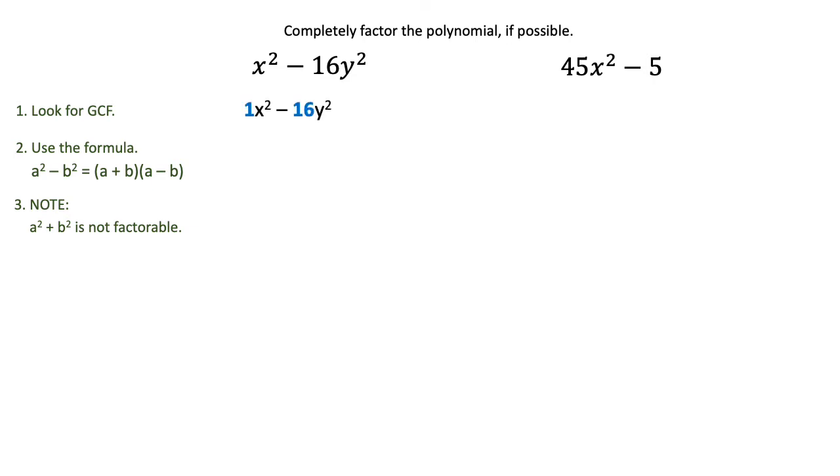In the first example we just have a 1 and a 16 and we have different variables, so we don't have a GCF in that one.